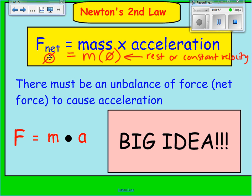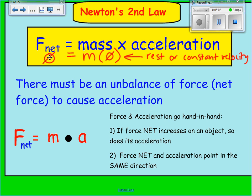Here's the equation for Newton's second law: force net equals mass times acceleration. The big idea is that force and acceleration go hand in hand — they have a direct relationship. If the force gets bigger, so does the acceleration. If the force gets smaller, so does the acceleration. If the net force increases on an object, so does its acceleration, and the opposite is true.